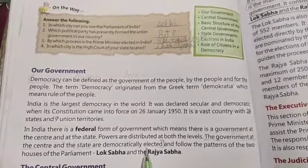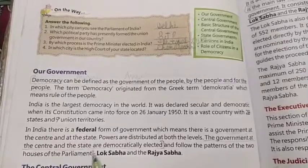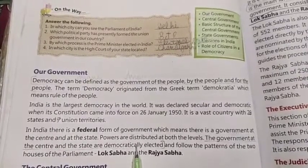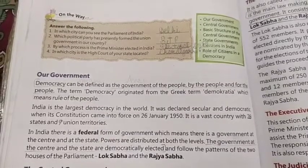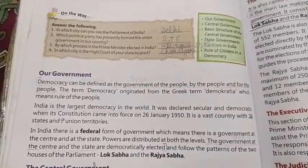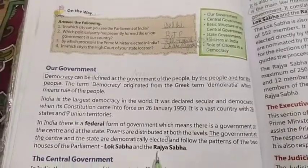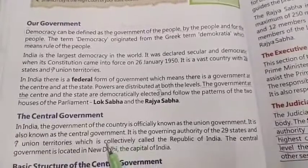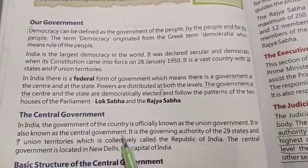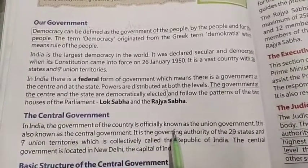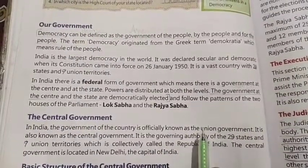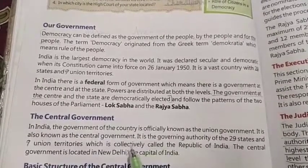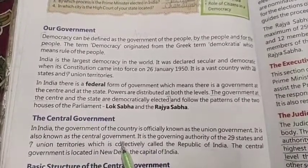Both the center as well as state governments are democratically elected. We are following the two houses of parliament: Lok Sabha and Rajya Sabha. The government of the country is officially known as the union government, also known as the central government.